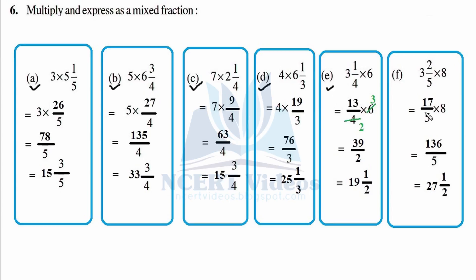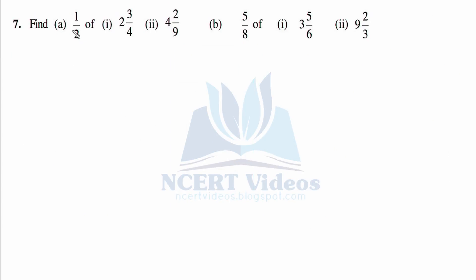Part F: five times (3 and 2/5) — open: five three is fifteen plus two = seventeen over five. Multiply: eight times seventeen — eight sevens are fifty-six, carry eight plus five is thirteen — giving one hundred thirty-six over five. As a mixed fraction: twenty-seven fives are one hundred thirty-five, remainder one — answer is twenty-seven and one over five. That was question number six.